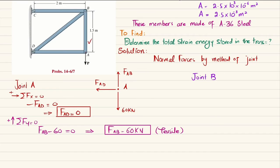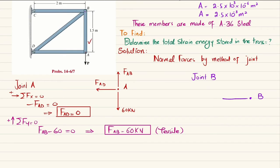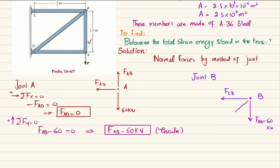Now we apply the method of joints at joint B. At joint B, member AB exerts force F_AB downward (60 kN). Member CB exerts force F_CB horizontally. Due to compression, member BD exerts force F_BD in the diagonal direction at point B.